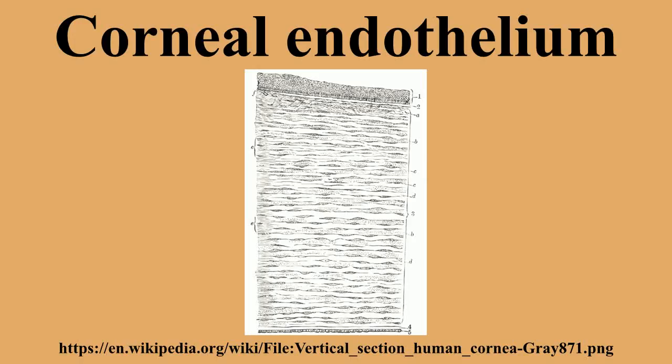The corneal endothelium is a single layer of cells on the inner surface of the cornea, facing the chamber formed between the cornea and the iris. These are specialized, flattened, mitochondria-rich cells that line the posterior surface of the cornea and face the anterior chamber of the eye. The corneal endothelium governs fluid and solid transport across the posterior surface of the cornea and actively maintains the cornea in the slightly dehydrated state required for optical transparency.